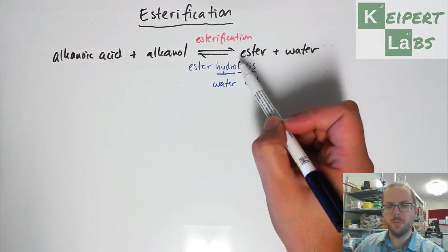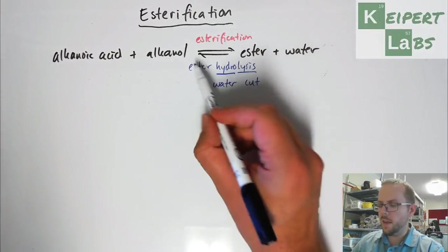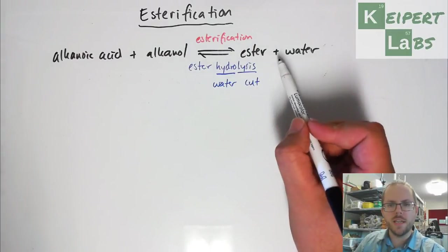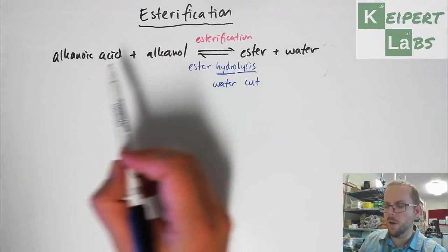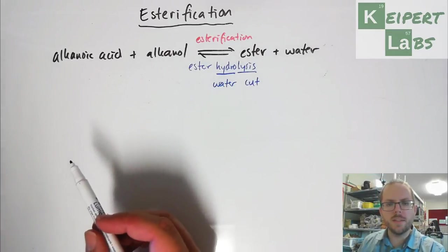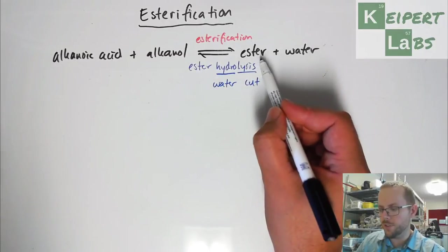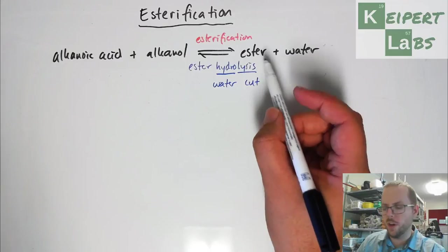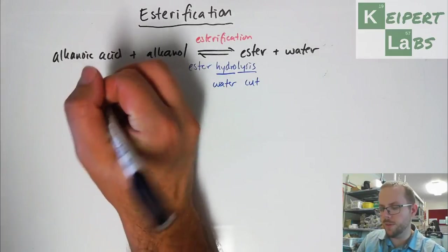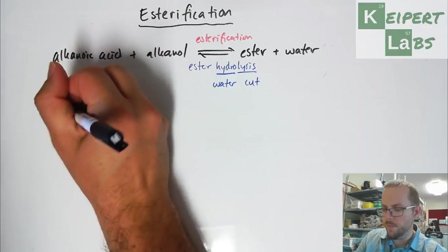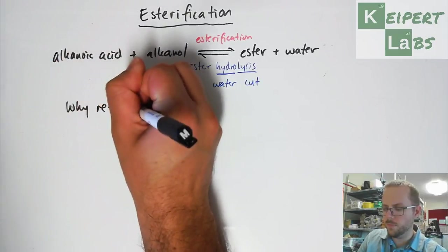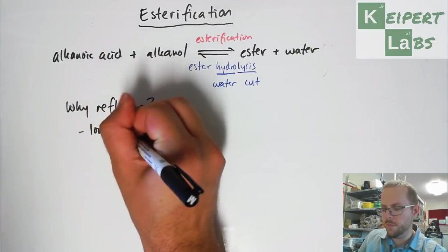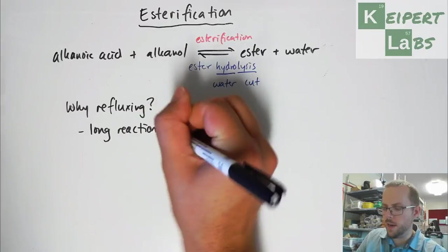So when we see that we've got an equilibrium here, we see that we have a forward reaction, and then after a while, as we're producing an ester, that then the ester can start to break down to reform our reactants. So that means that in order to produce enough ester, we have to think about Le Chatelier's principle to guide us. So the reason that we use refluxing, let's write down a few thoughts. So we need long reaction times. This reaction is very slow.